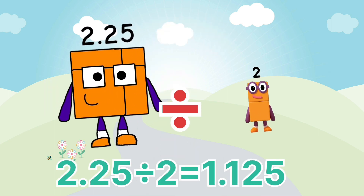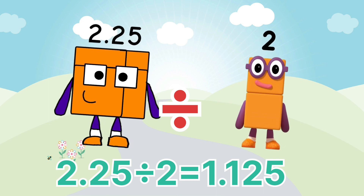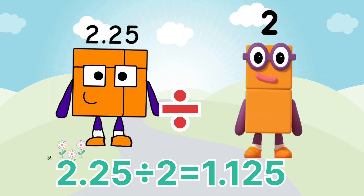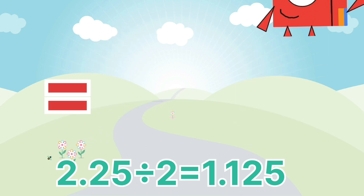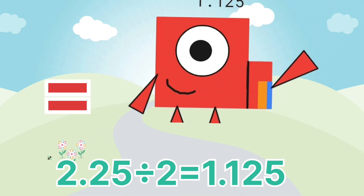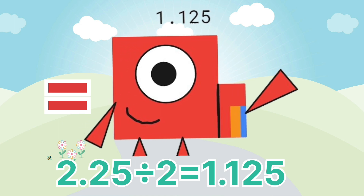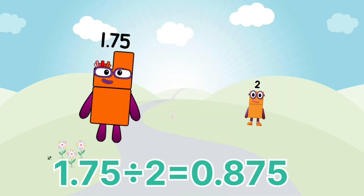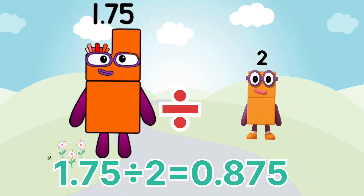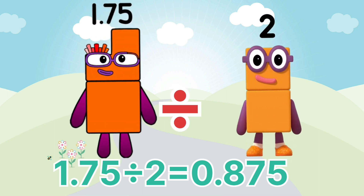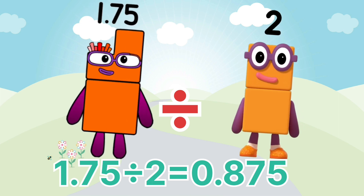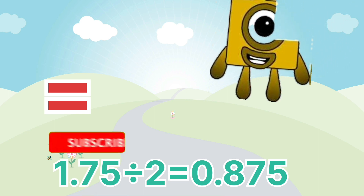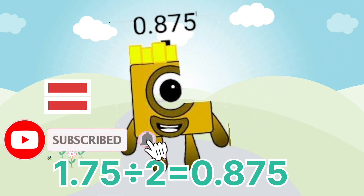1.75 divided by 6 equals 0.375. 1.75 divided by 5 equals 0.775.